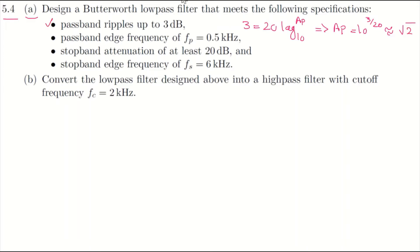The stopband attenuation is at least 20dB, so using the same formula we can find as, the minimum stopband attenuation: 20 log base 10 of as equals 20dB. So as equals 10 to the power of 20/20, which is 10. So we have ap and as.